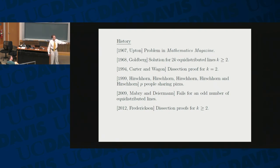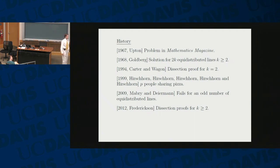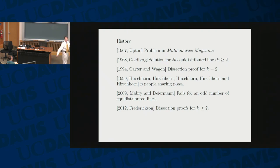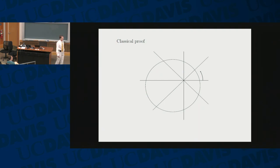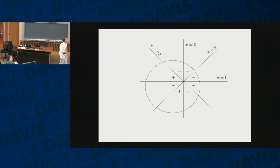Hirshhorn looked into the problem of sharing pizza this way among more than two people. It fails for an odd number of lines, and the dissection proofs work for 2k lines. The classical proof is that you can rotate the lines and see how much the amount of pizza changes. But I want you to think about these four lines this way.